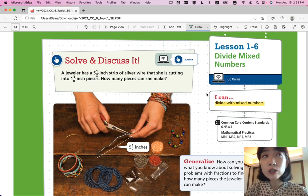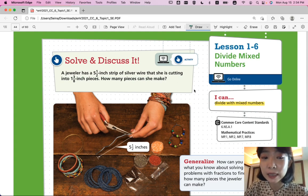So we learned how to divide fractions last time. This is very similar, but with mixed numbers. Let's start with solve and discuss it. A jeweler has a 5 1⁄2-inch strip of silver wire that she is cutting into 1 3⁄8-inch pieces. How many pieces can she make?